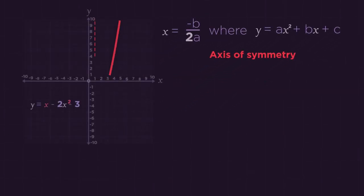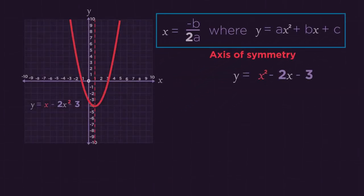So let's check it for this graph. a is 1 and b is negative 2. So the axis of symmetry equals minus negative 2 divided by 2 multiplied by 1. So 2 divided by 2 which is 1. So x equals 1.